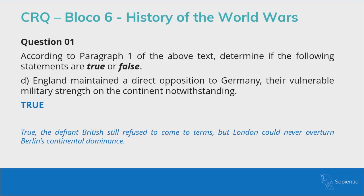Letter D: 'England maintained a direct opposition to Germany, their vulnerable military strength on the continent notwithstanding.' Note that 'notwithstanding' at the end of the expression simply means 'despite' — a more formal way of writing it. This is true. The text says 'the defiant British still refused to come to terms, but London could never overturn Berlin's continental dominance.' England was in opposition to Germany but lacked the military strength to combat them on the continent.